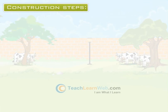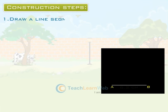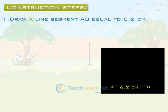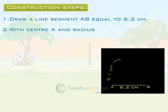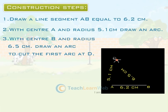Construction Steps. Step 1: Draw a line segment AB equals 6.2 cm. Step 2: With center A and radius 5.1 cm, draw an arc. Step 3: With center B and radius 6.5 cm, draw an arc to cut the first arc at D. Step 4: Draw AD and BD.